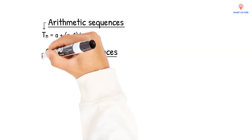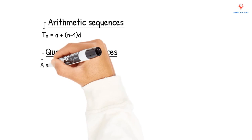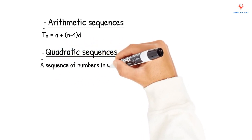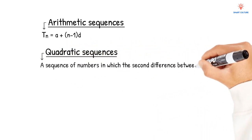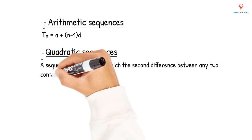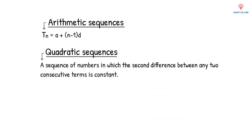How do you think a quadratic sequence is different from a linear sequence? A quadratic sequence is a sequence of numbers in which the second difference between any two consecutive terms is constant. It will not be the first difference as in linear sequences — in this case only the second difference will be constant.